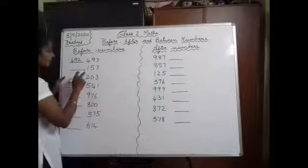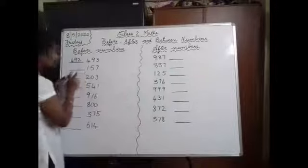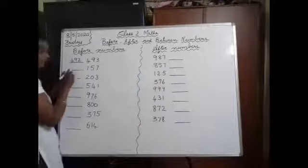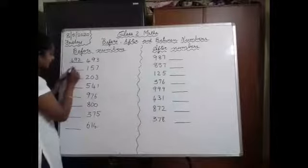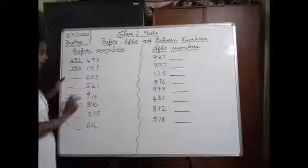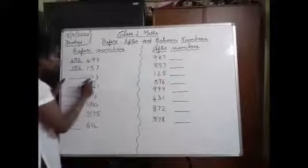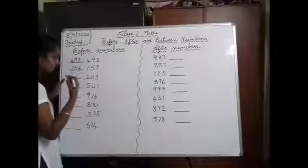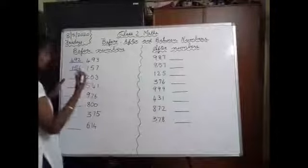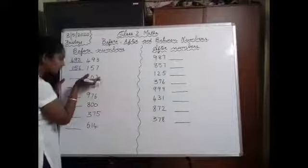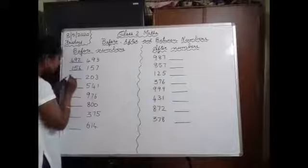Next, before 157, which number will come? 156. Next, before 203 — start saying from 200: 201, 202, 203. So before 203, which number comes? 202.